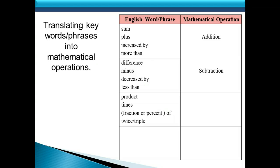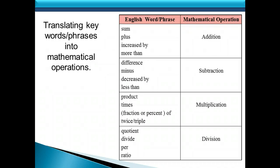Next we have the word product, the word times, and if you have a fraction or a percent preceding the word of, or the words twice or triple, those all indicate multiplication. Next we have the word quotient, the word divide, the word per, and the word ratio — all of those represent division. You might pause the video and write these down to help with the rest of our problems.